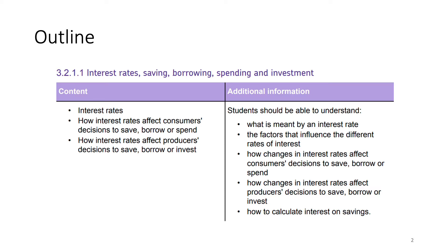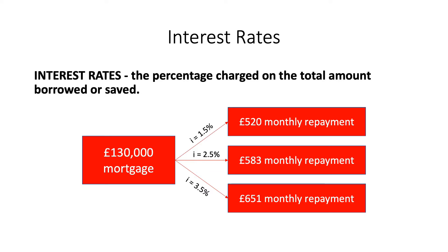We'll also look at some mathematical calculations for calculating interest on savings. The main definition of an interest rate is: it is the percentage charged on the total amount borrowed or saved. For example, if you take out a hundred pound loan at a five percent annual interest rate, then you would have to pay the lender an additional five percent in interest payments.